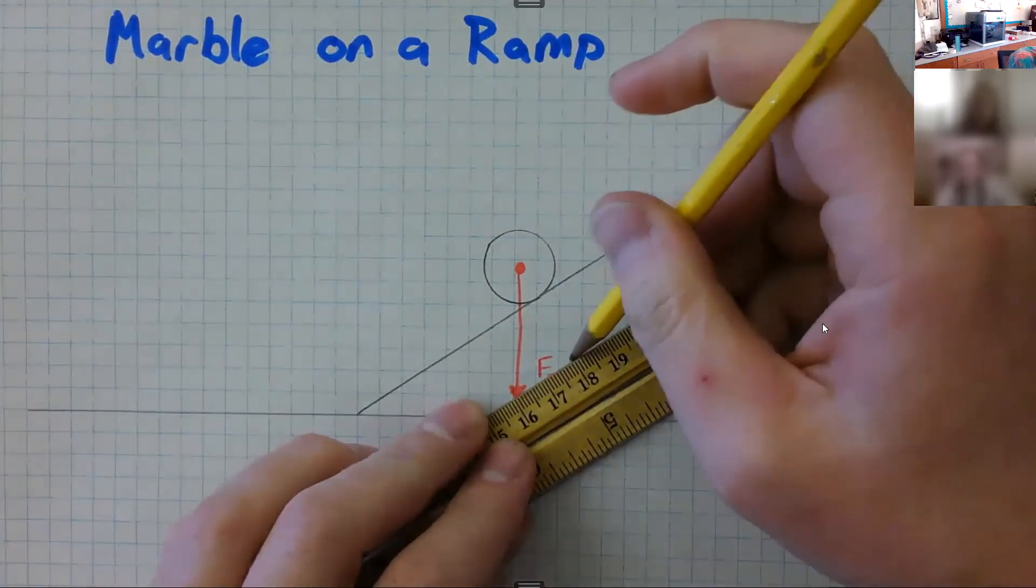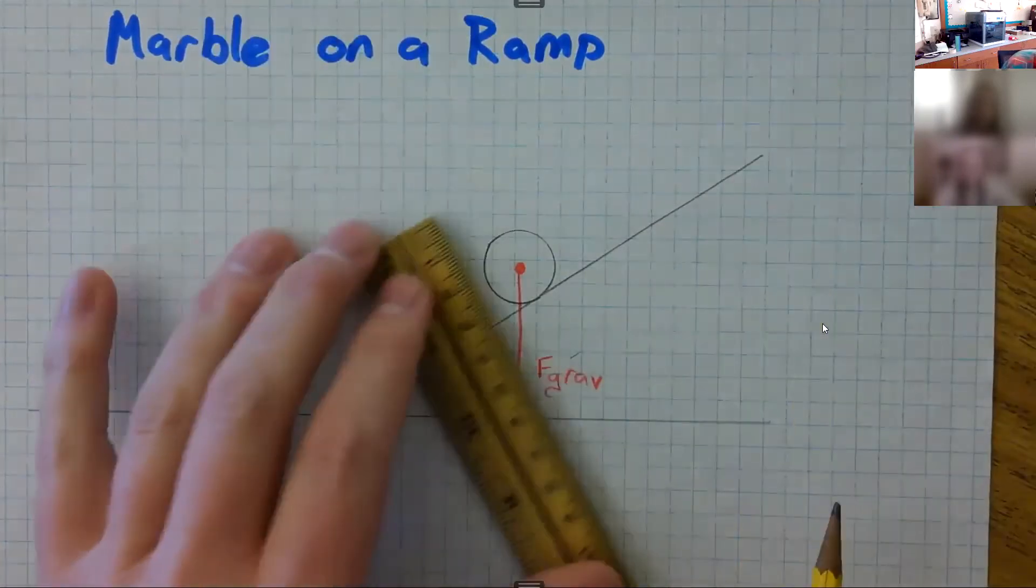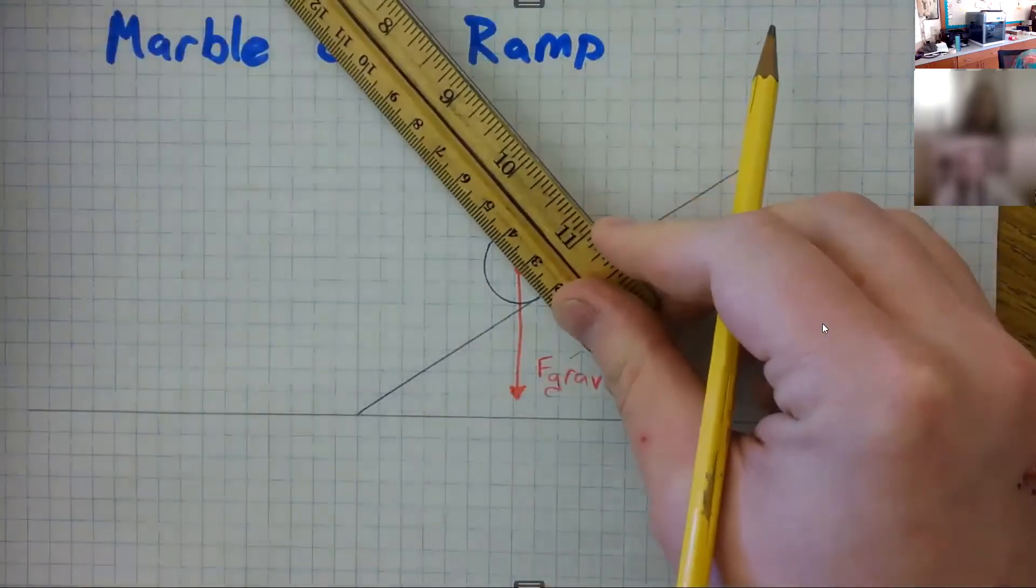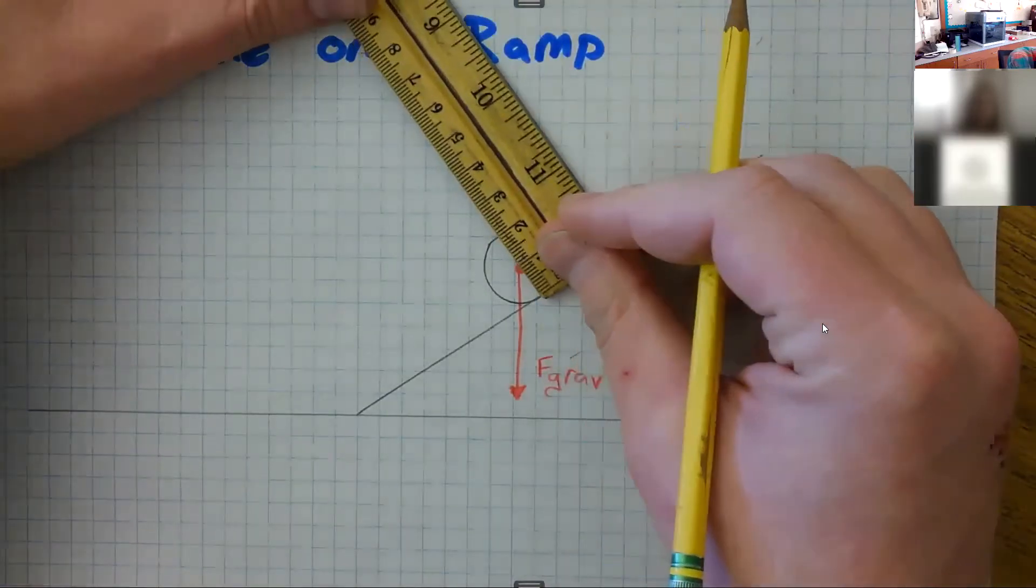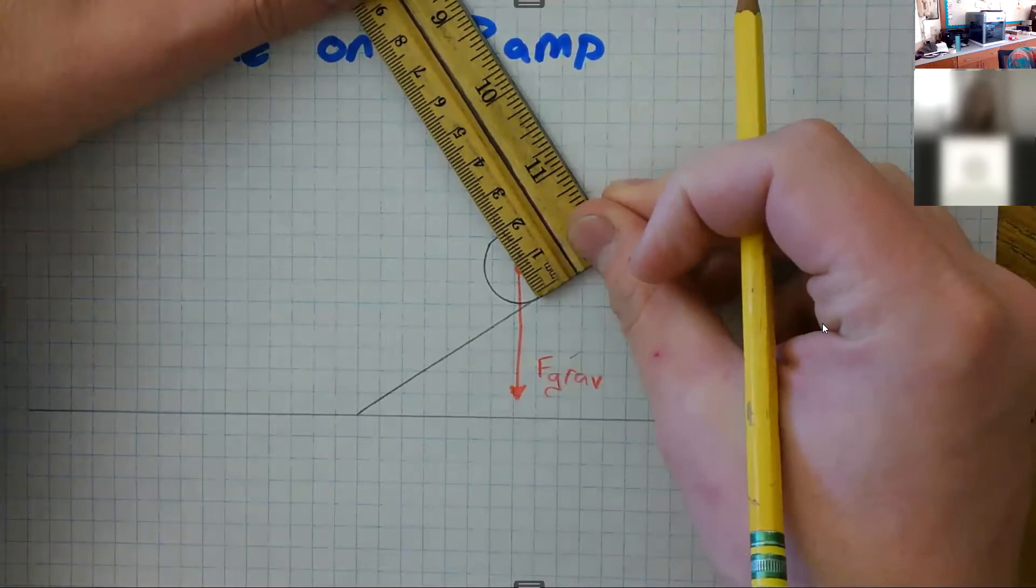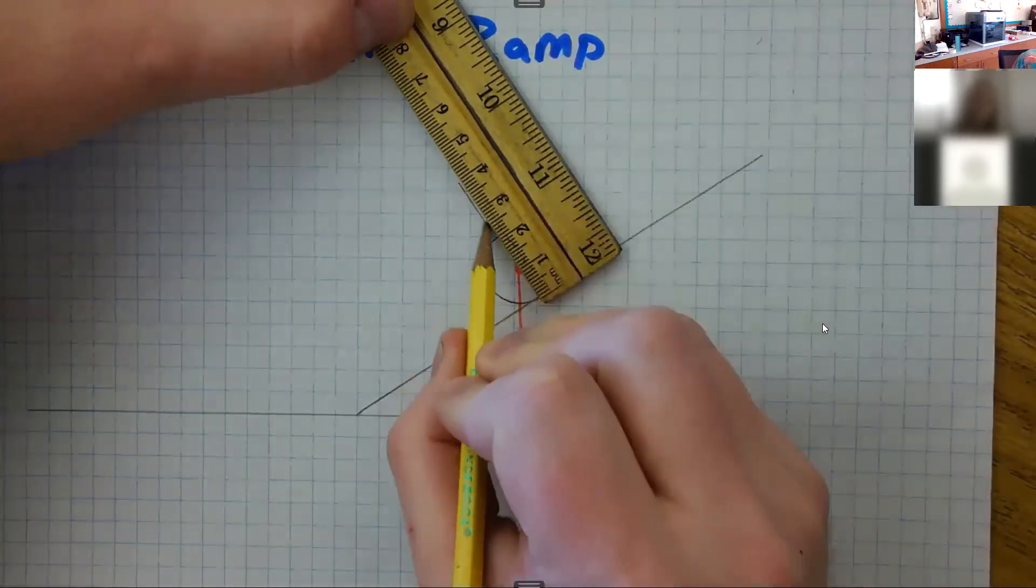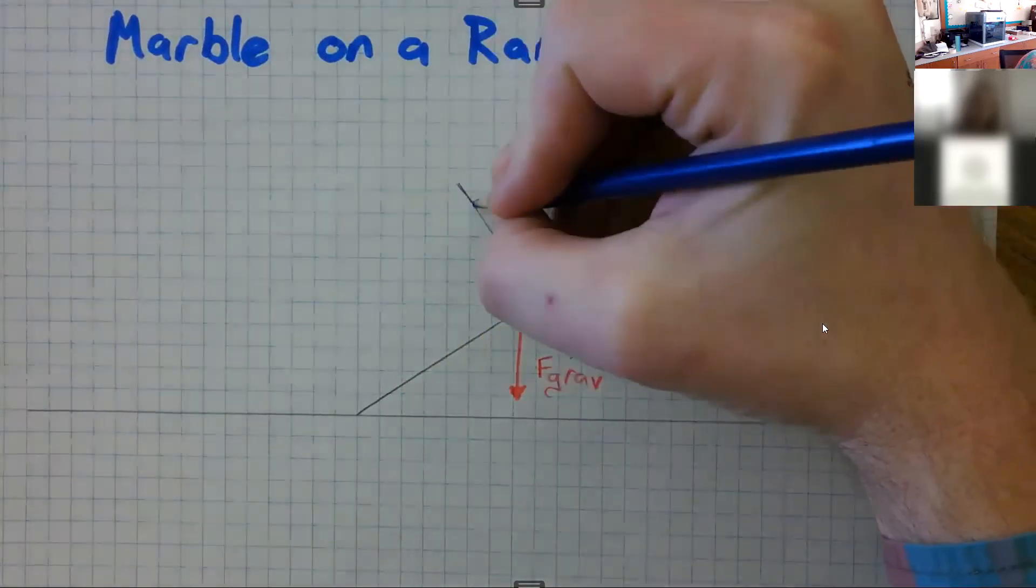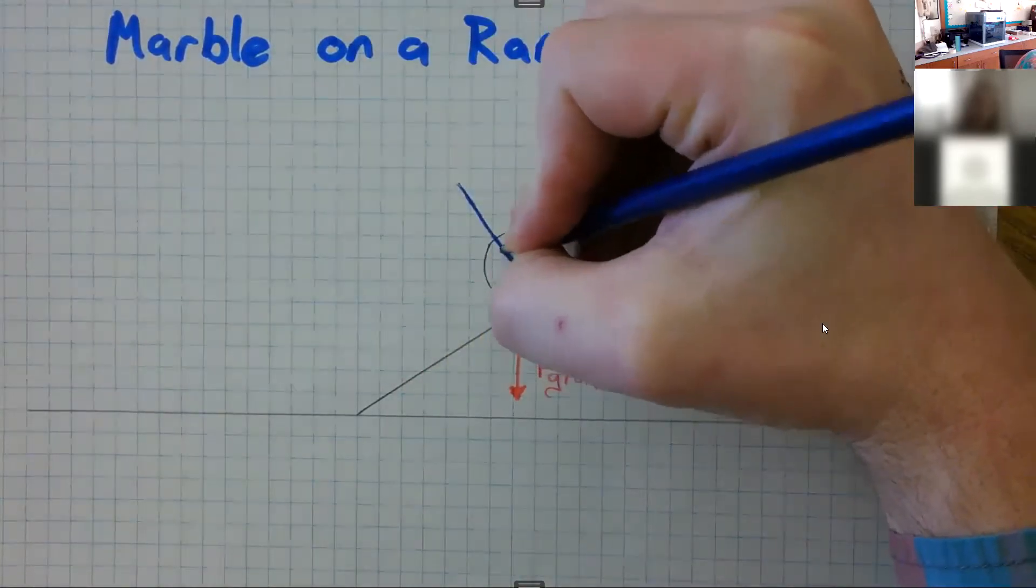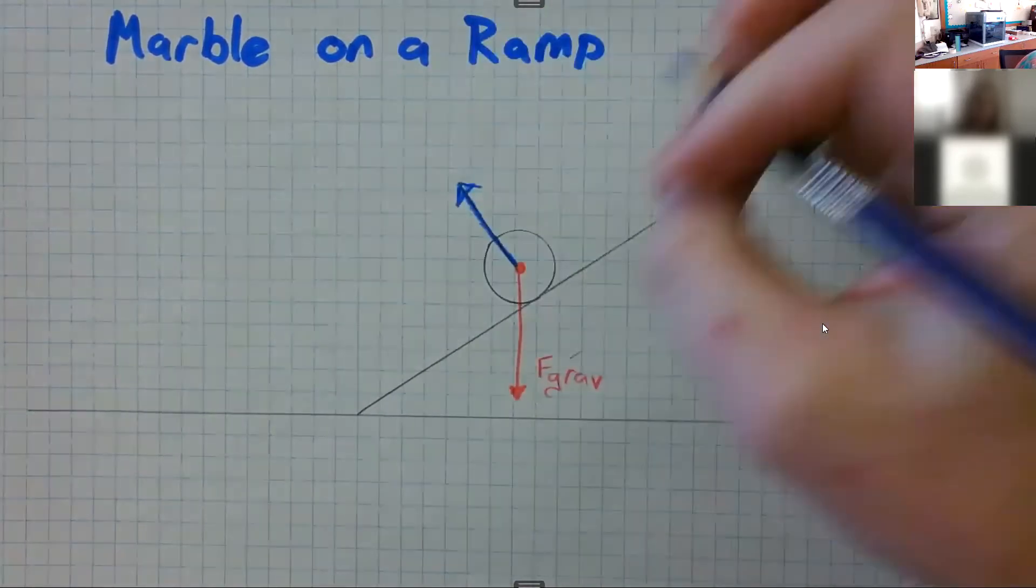So I'm really quick just going to make some little markings to help me measure, so at a right angle, so 90 degree angle from the ramp. Let's make it a fun color. So that's the normal force.